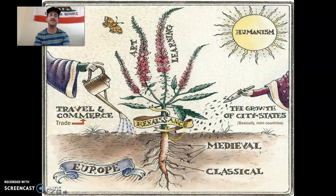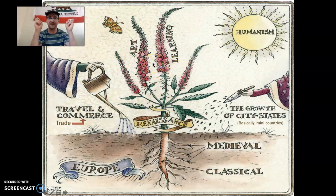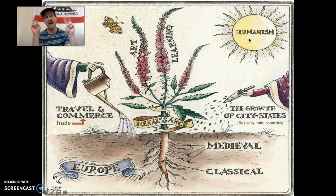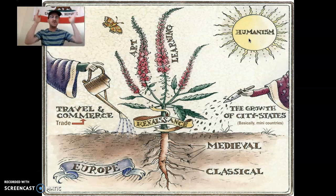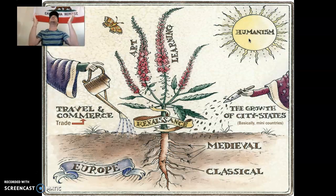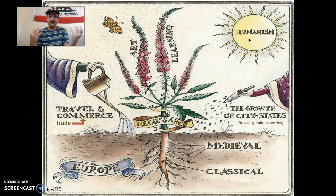Once these two periods — the classical and the medieval — come into fruition, that gives way to what we're going to be discussing over the next three weeks: the Renaissance. There are two main things that blossom during the Renaissance — art and learning. These are the flowers of the Renaissance. However, the Renaissance also needs three other factors. Factor number one, the sun of the Renaissance, is called humanism. Humanism is the focus on individual human achievements, rather than simply looking up at God during the medieval period.